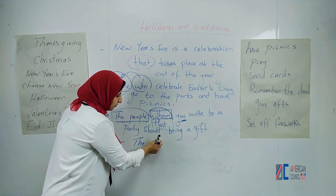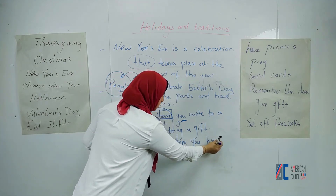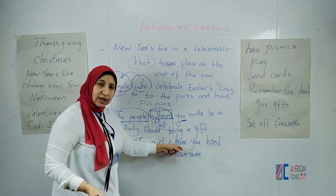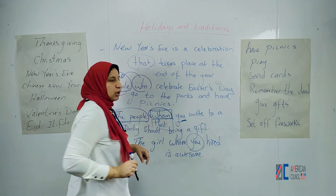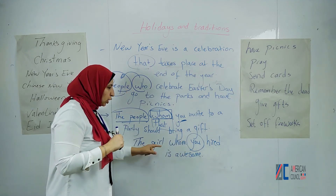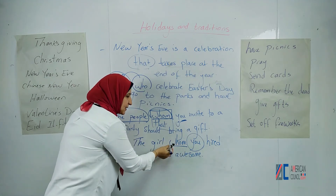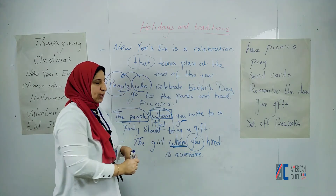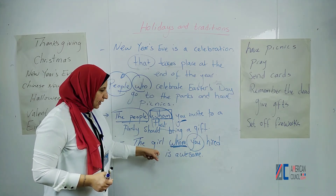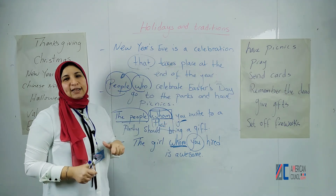Let's try another sentence: the girl whom you hired is doing a great job. You are the doer of the action — you're the subject, and you hired the girl, so the girl is the object. The girl whom you hired is great. Can we replace that with something else? Yes — we can say the girl who you hired or the girl that you hired. All three are okay, but 'whom' is the most formal format. Hopefully this was useful. Thank you very much.